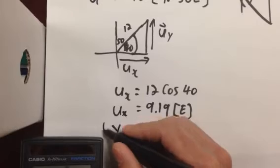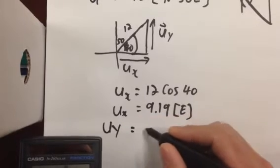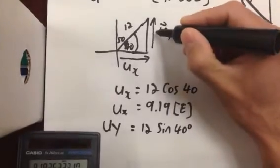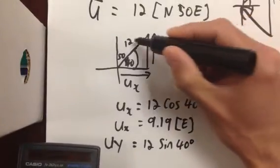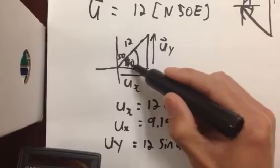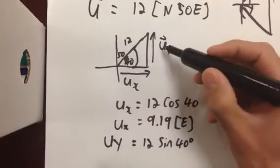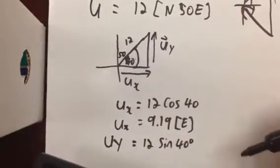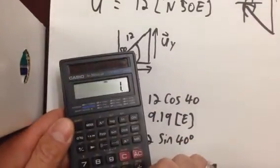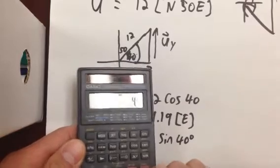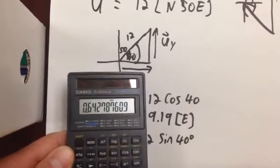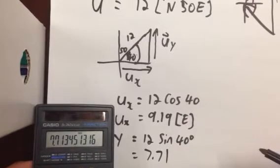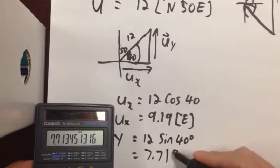Likewise, uy is 12 sine 40 degrees. That's this one here. And opposite over hypotenuse is the sine of the angle. So if you rearrange that, uy is 12 times the sine of 40 degrees, which is 7.71. And that's north.